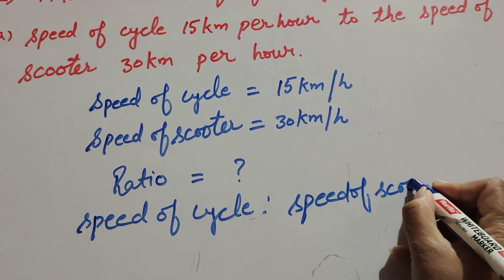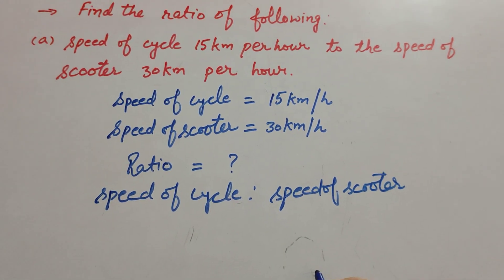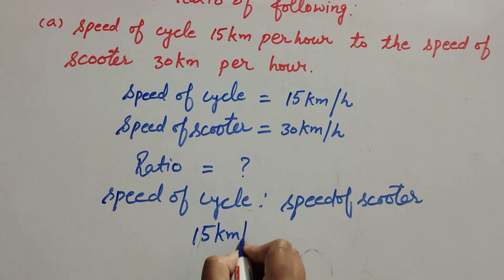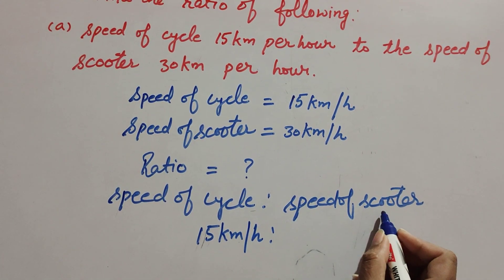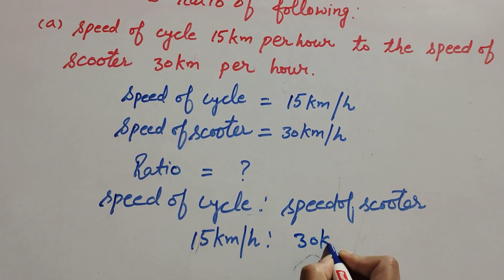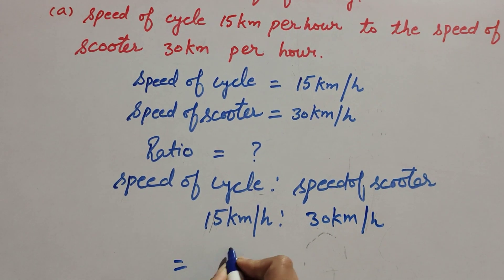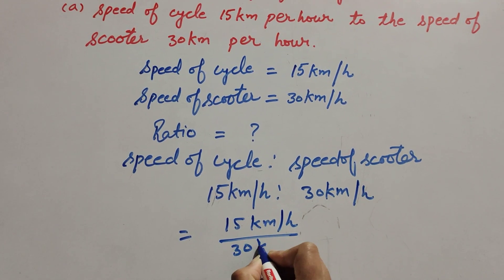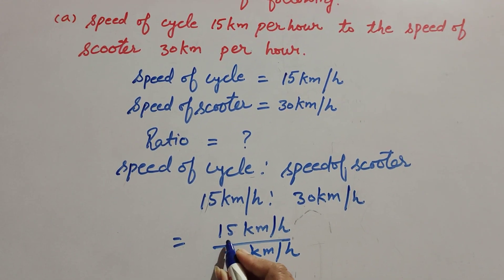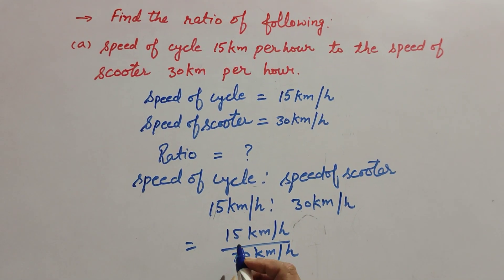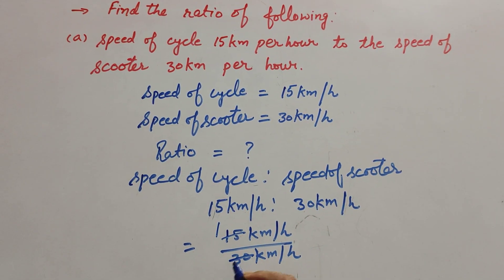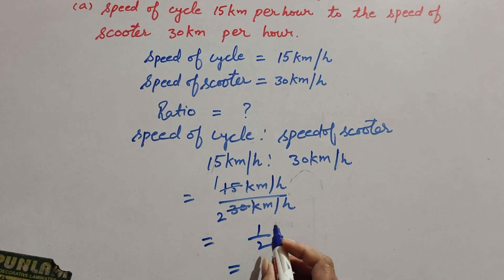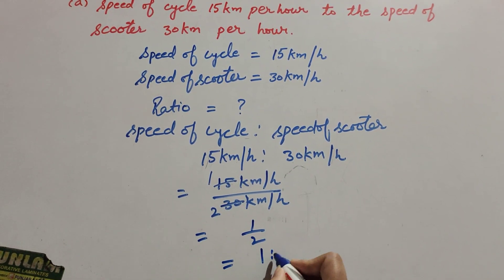Speed of cycle is equal to 15 kilometers per hour, ratio speed of scooter equal to 30 kilometers per hour. So it is equal to 15 over 30. Since 15 and 30 are both divisible by 15, we cancel them — 15 ones are 15, 15 twos are 30 — so it equals 1 over 2. The ratio of speed of cycle to speed of scooter is equal to 1:2.